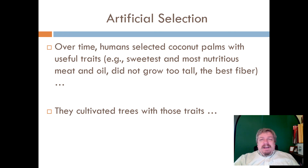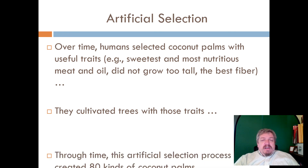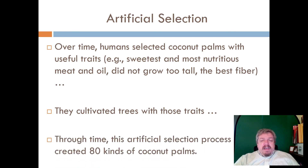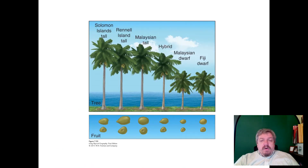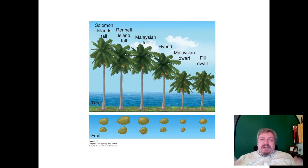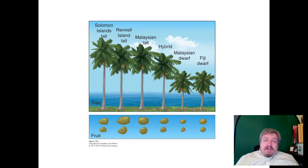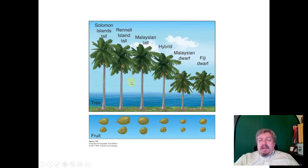Through artificial selection, we chose which coconuts to plant and which not to, selecting for certain traits. We basically artificially manipulated evolution. Today there are 80 different types of coconut trees of different heights and fruit sizes. This illustrates ideas about geographic range — how things move naturally, how that can be altered, what happens when it is altered, and how we go from one or two coconut species to 80.